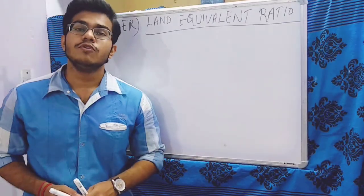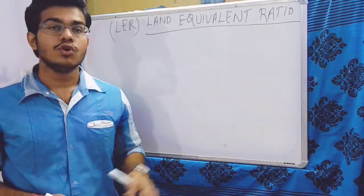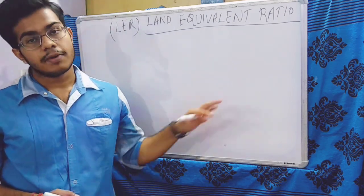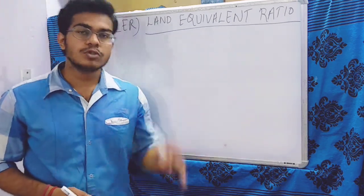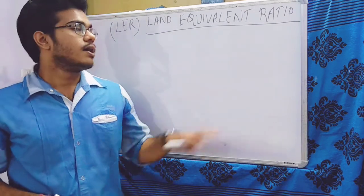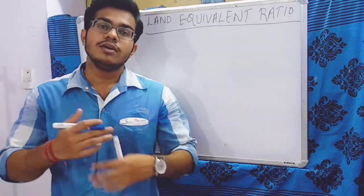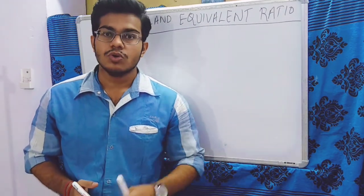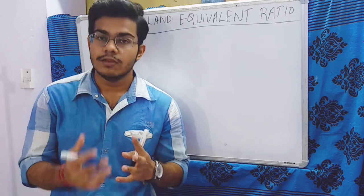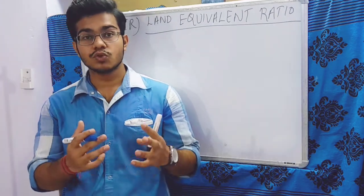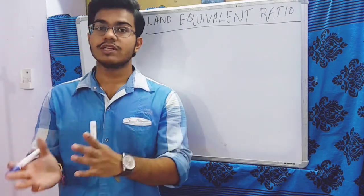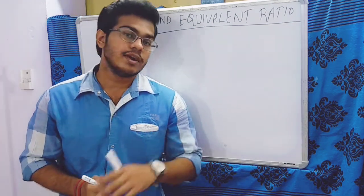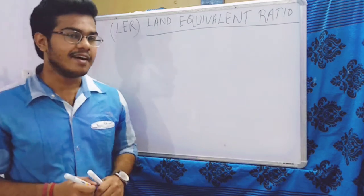Before calculating LER, we should know the most important thing about it. LER is mostly calculated for intercropping systems because in intercropping we cultivate 2 to 3 crops. To know how much land is used by the crops and how much yield we could have gotten if we grew the sole crop, we have to calculate LER. Now let us learn about the formula of LER.